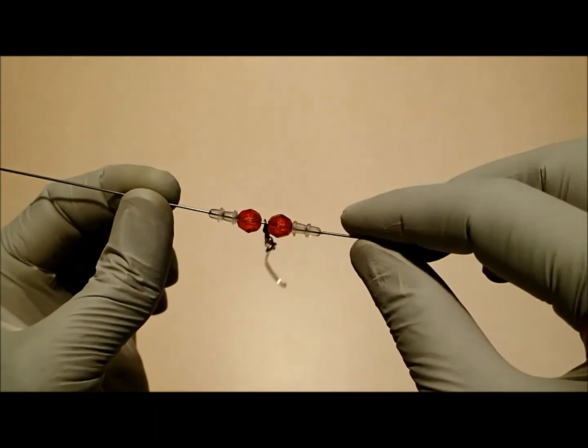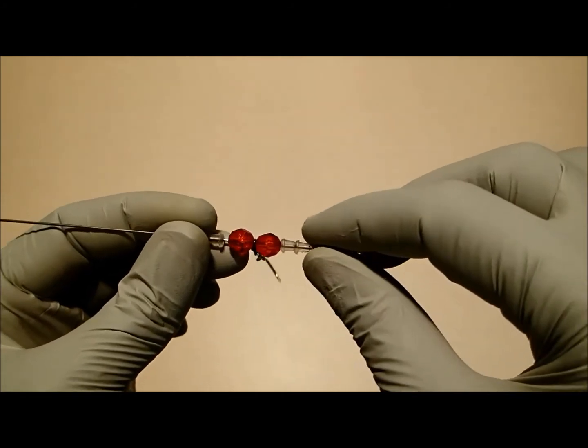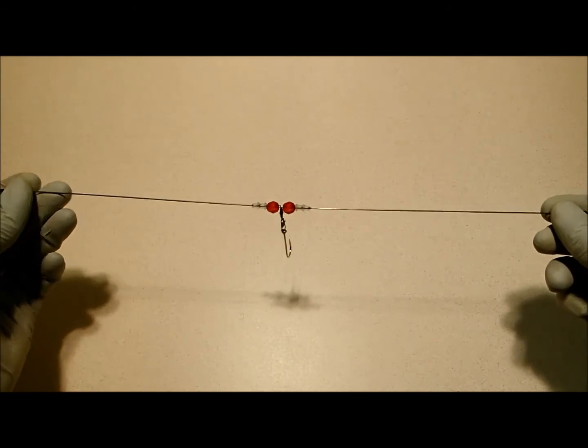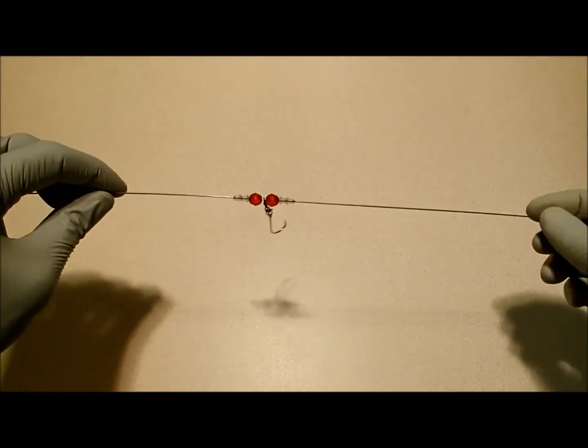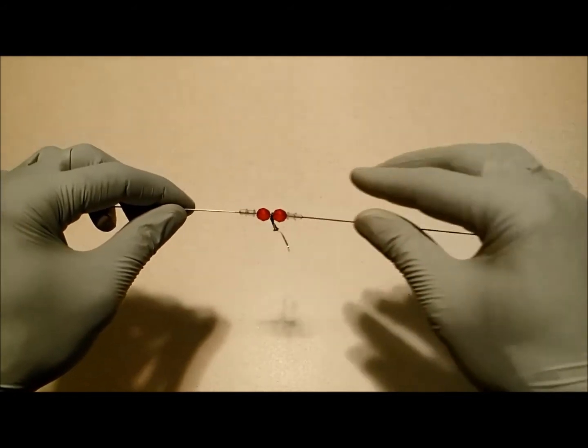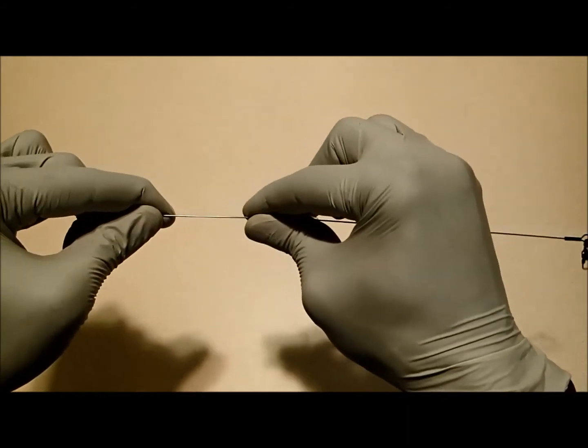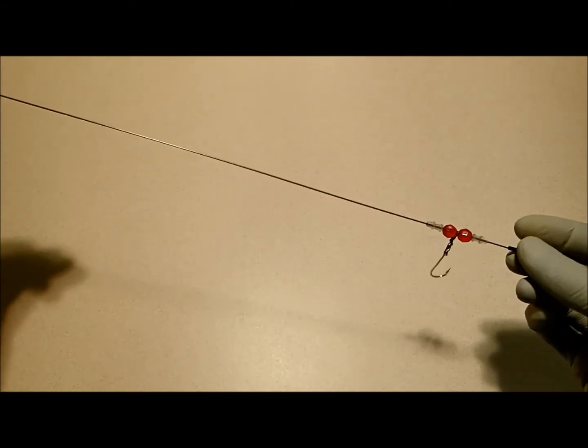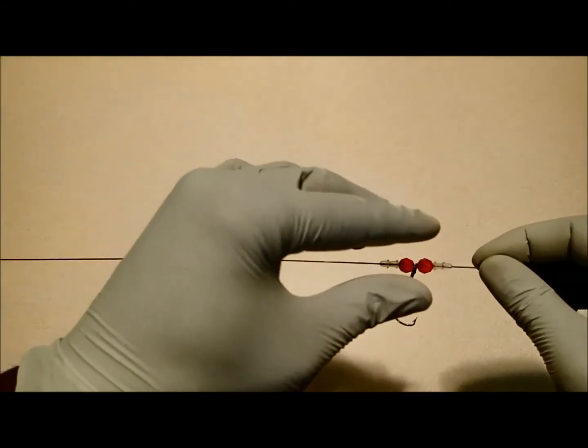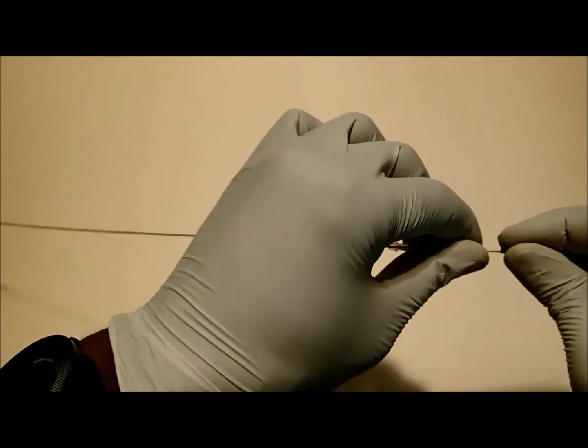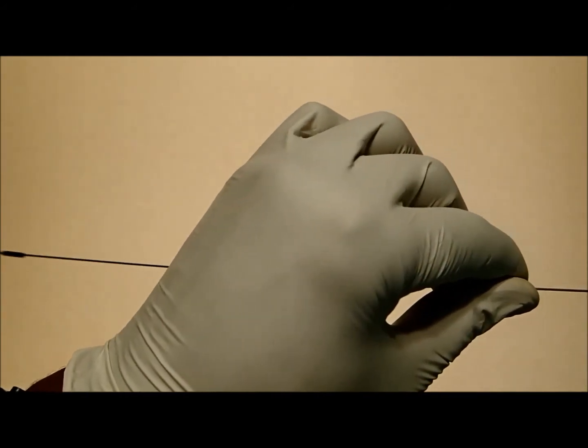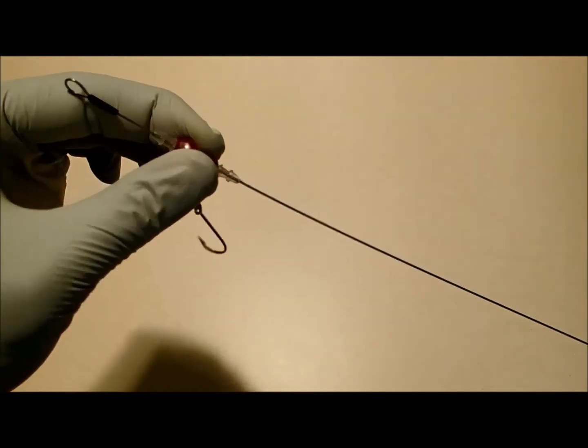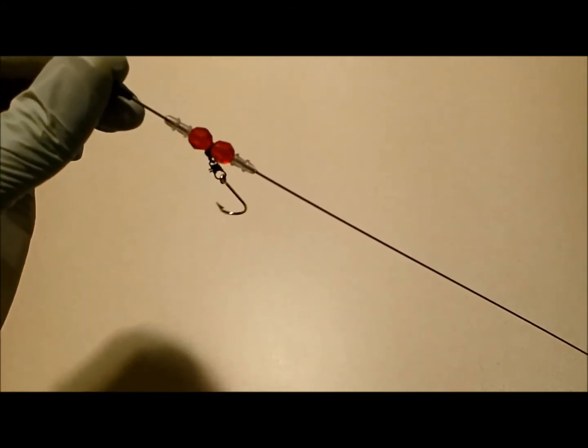This allows you to position your hook anywhere along the 15 inch length of this rig. So that means that if you wanted to fish your bait closer to the bottom, slide that whole assembly down and you're closer to the bottom. If you want to fish it closer to the top, slide the whole assembly up and you'll fish it closer to the top.